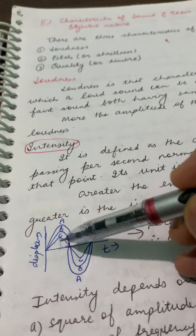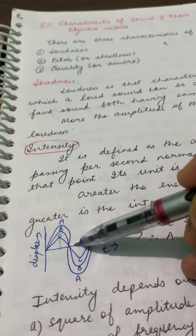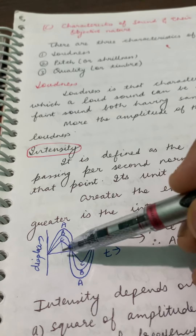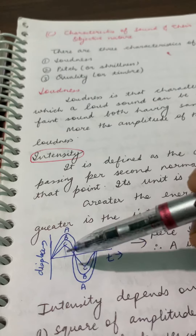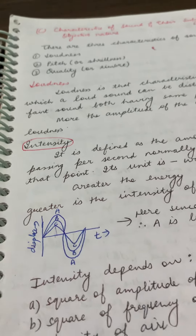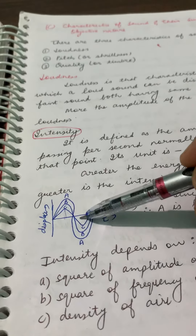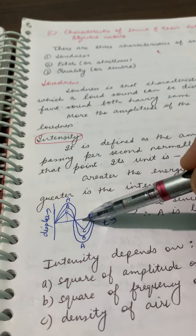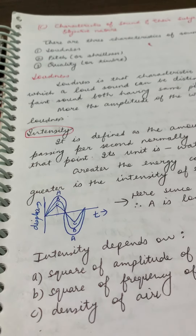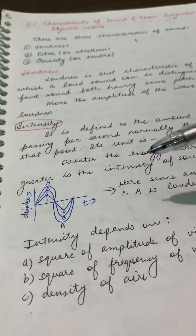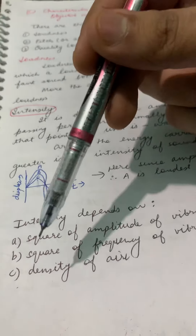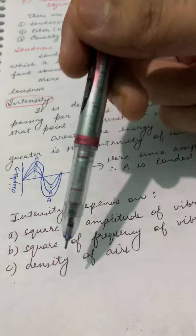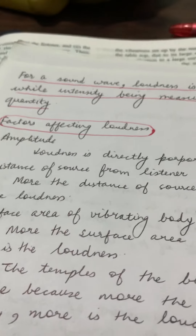Amplitude is the maximum displacement from its mean position on either side — it can be the positive side or the negative side. This is called amplitude. A has the greatest amplitude, so A is the loudest here. Intensity depends on: the square of amplitude, the square of frequency, and the density of the air.